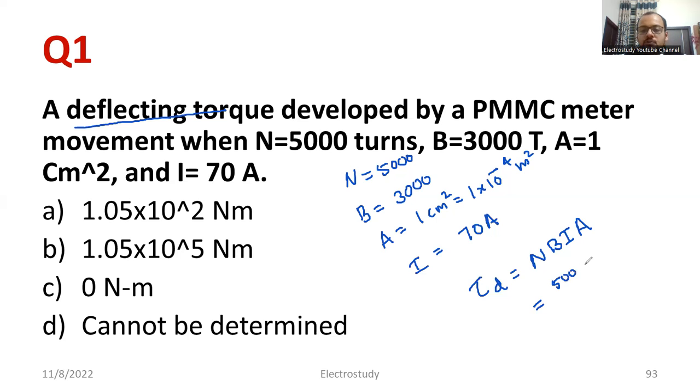Immediately you have to solve because even 1 second is precious. You need to multiply 1 into 10 to the power minus 4 into 70. What would be the answer? I request everyone to get the answer immediately. So if you solve it quickly, you are able to reach option B: 1.05 into 10 to the power 5 Newton meter. This is actually the deflecting torque developed in the particular instrument. Moving further.